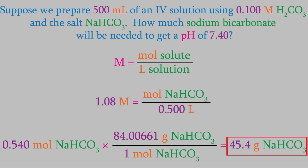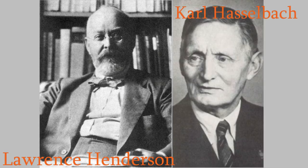So, this is one way of figuring out how to make a buffer. As you can tell, it takes a little time to do this calculation, but it turns out there's a shortcut that we can use. At the beginning of the 20th century, two physiologists, Lawrence Henderson and Karl Hasselbach, were studying how the pH of blood is controlled by the body. It was Henderson who realized that blood contains a buffer, and Hasselbach figured out that the buffer was carbonic acid and sodium bicarbonate. The two of them together developed an equation that gives us a much faster way to determine how to make a buffer with the pH we want. Here's how they figured it out.